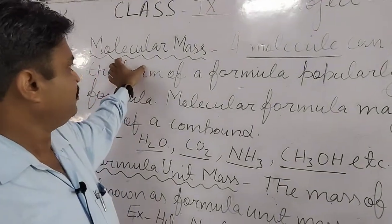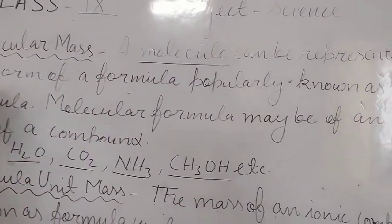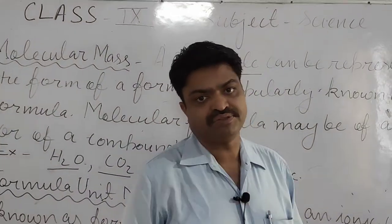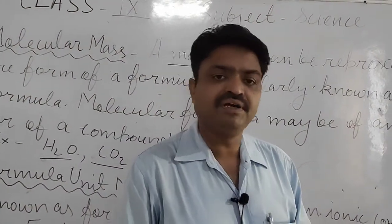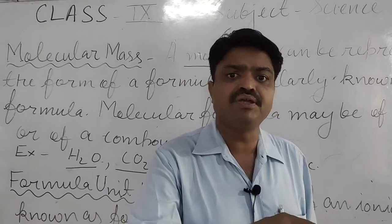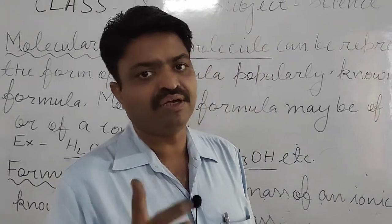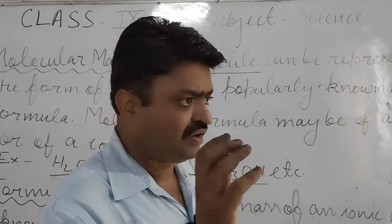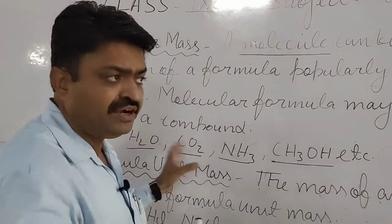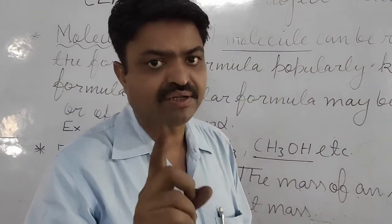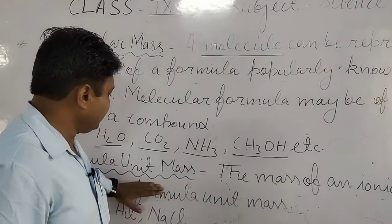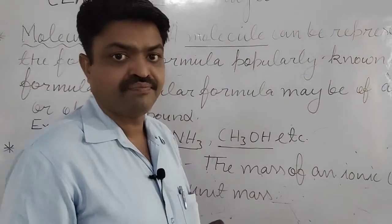Molecular mass can be represented in the form of a formula, popularly known for covalent compounds. For covalent compounds, the formula that we use is known as molecular formula, and the mass that we get for that molecule is known as molecular mass. Formula unit mass is the mass of an ionic compound.